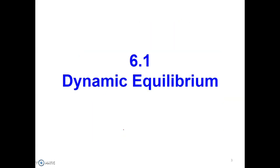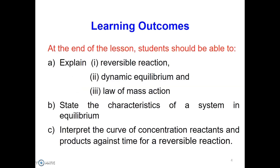Let's start with the first subtopic, Dynamic Equilibrium. Here are the learning outcomes. At the end of the lesson, students should be able to: A. Explain what is a reversible reaction; B. Explain what is Dynamic Equilibrium and the Law of Mass Action; C. State the characteristics of a system in equilibrium; and D. Interpret the curve of concentration of reactant and product against time for a reversible reaction.